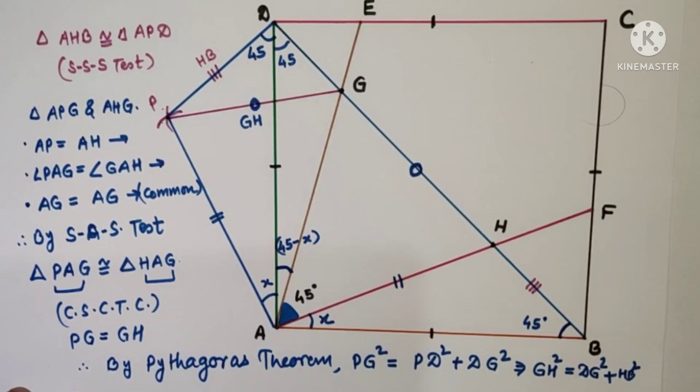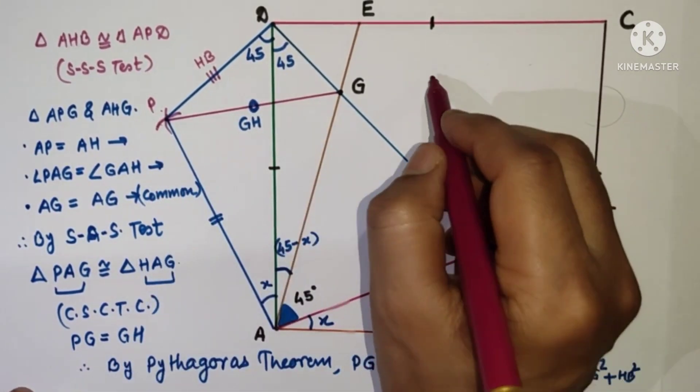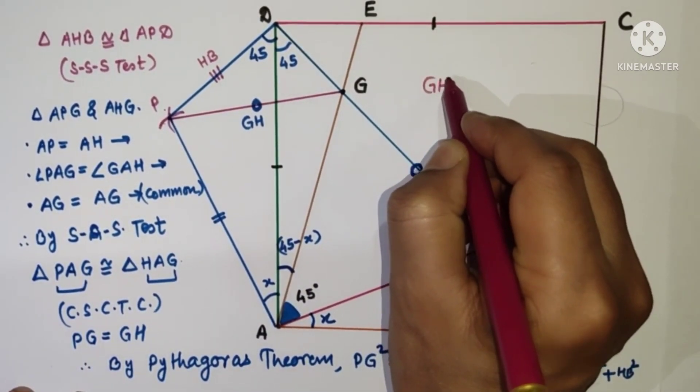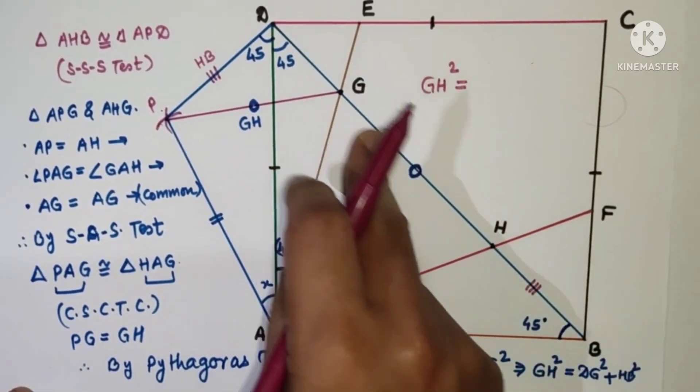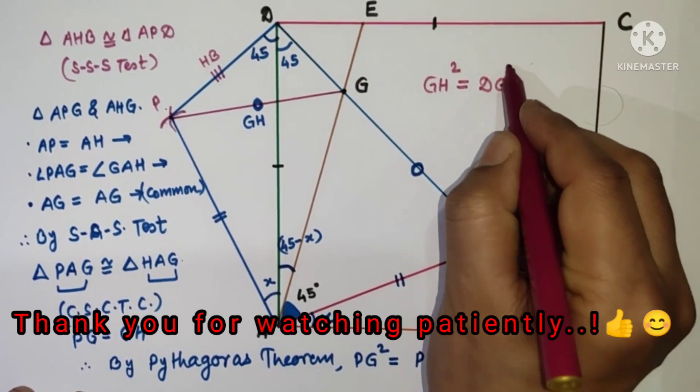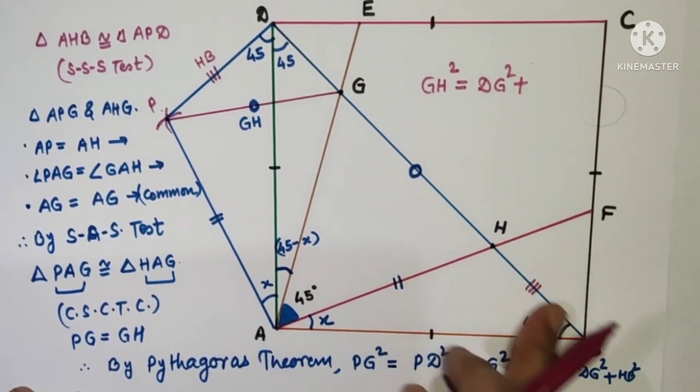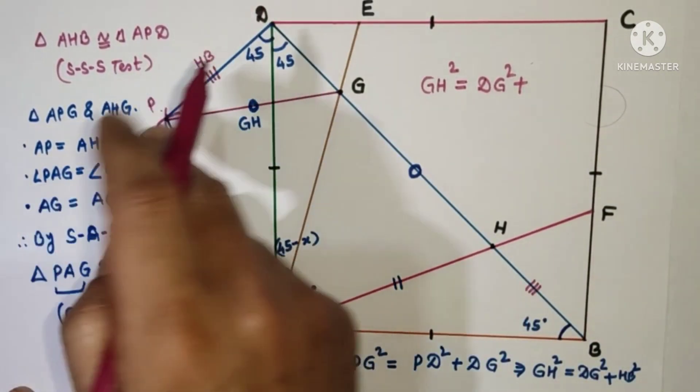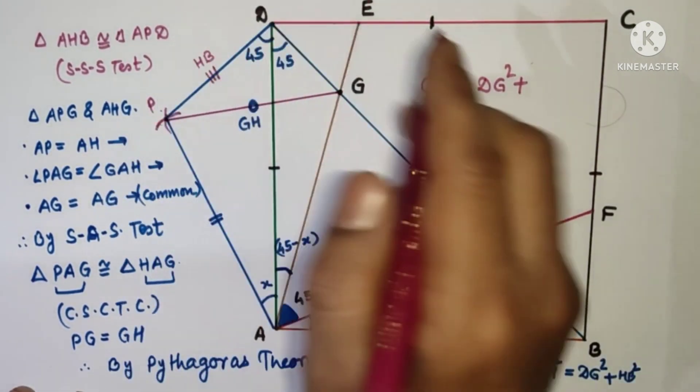This is the result. This GH square which is equal to DG square plus HB square. This is HB square.